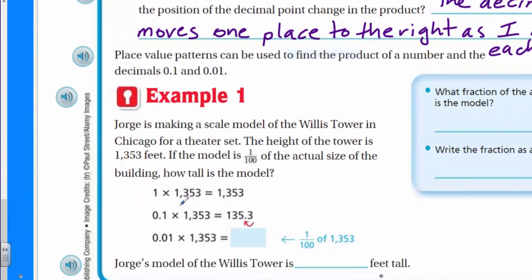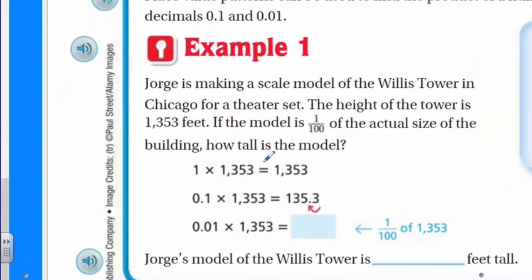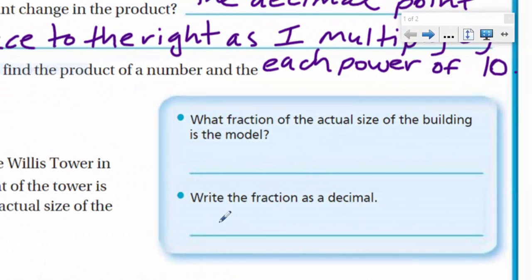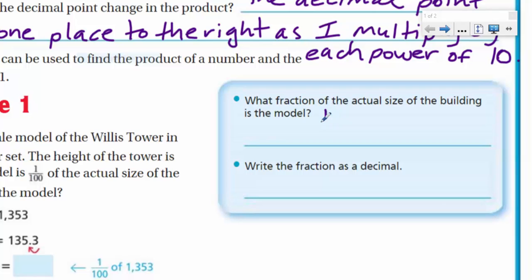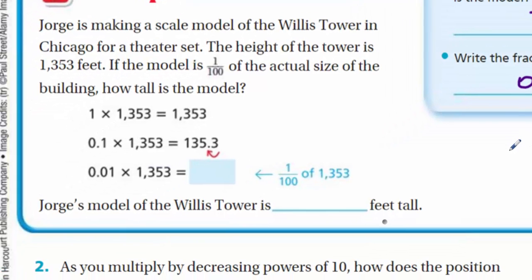This is example one. Jorge is making a scale model of the Willis Tower in Chicago for a theater set. The height of the tower is 1,353 feet — that's really tall. If the model is one-hundredth of the actual size of the building, how tall is the model? What fraction of the actual size is the model? That's in the problem — one-hundredth. Write the fraction as a decimal: that's 0.01. Be very careful to make sure we have it in the hundredths place.